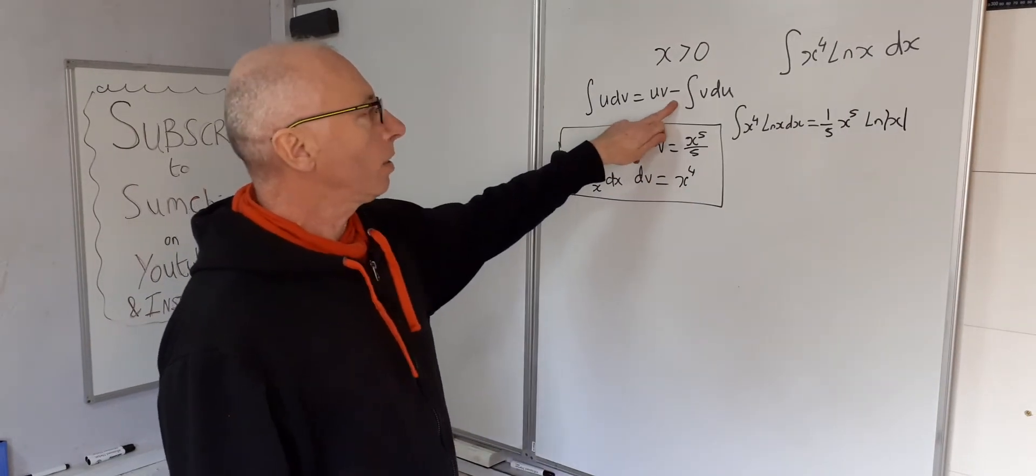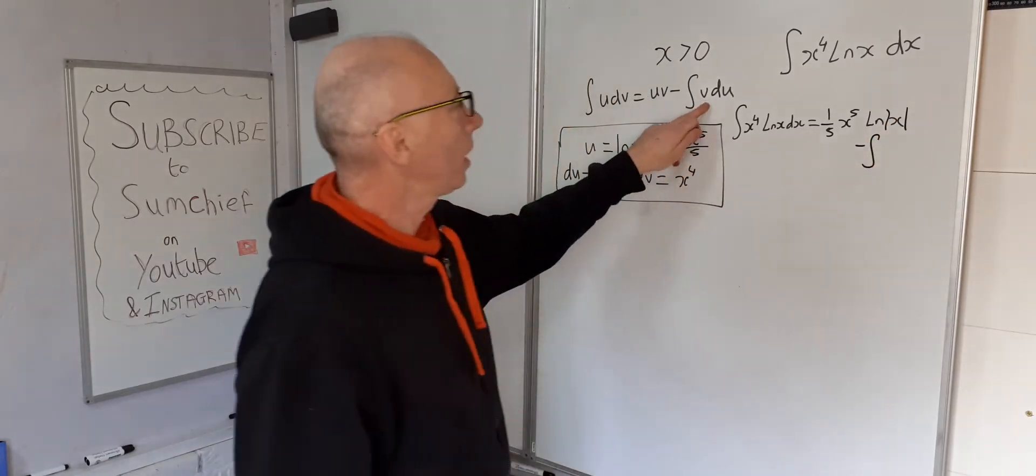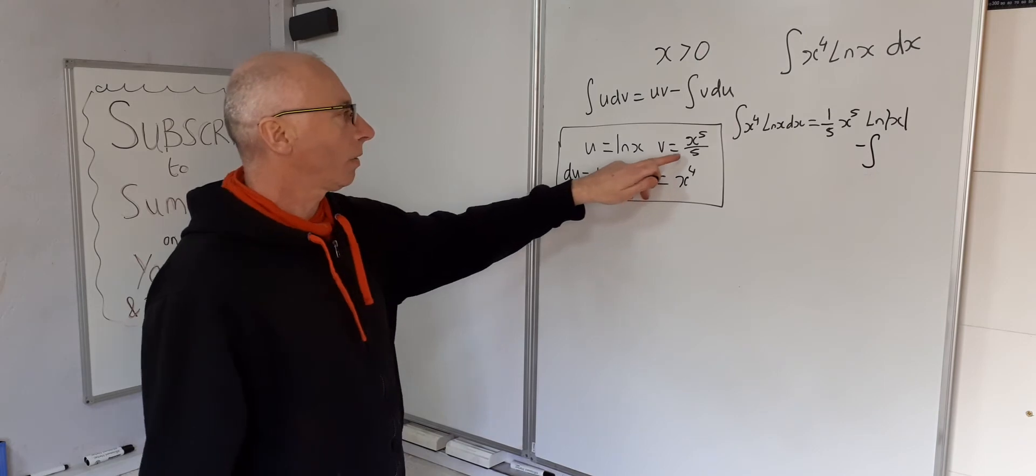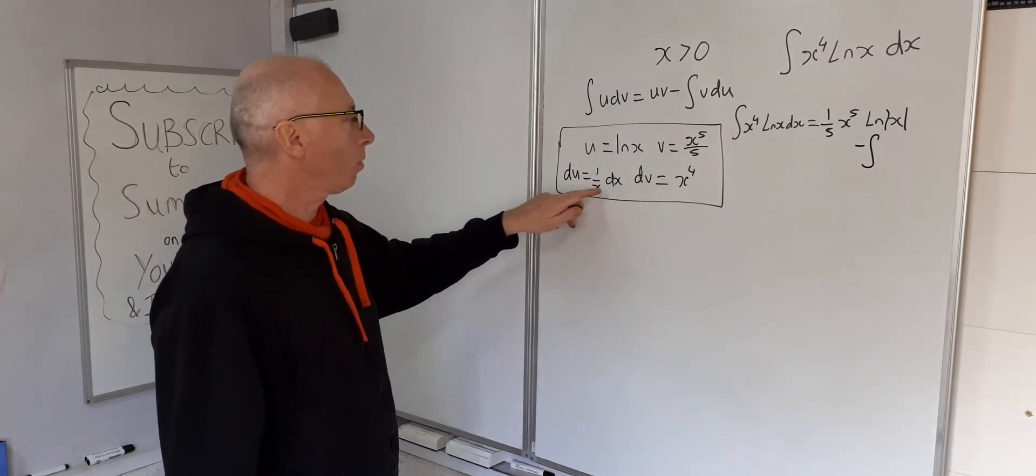Okay, and then minus integral. So I put that here minus the integral v times du. So v is x to the 5 over 5, du is 1 over x dx.